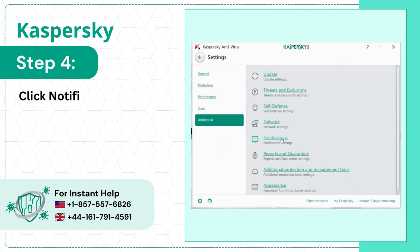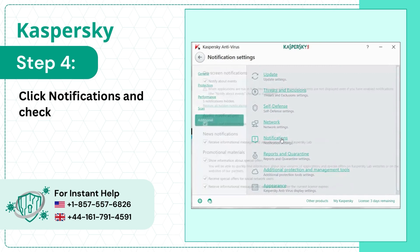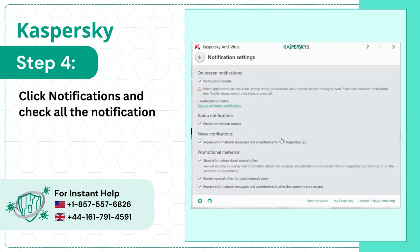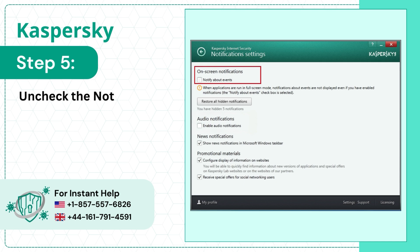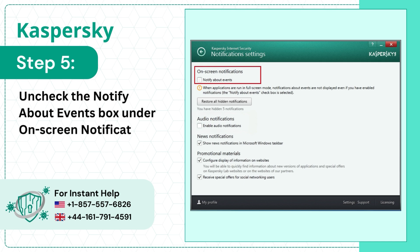Step 4: Click Notifications and check all the notifications you've turned on. Step 5: Uncheck the Notify About Events box under On-Screen Notifications.